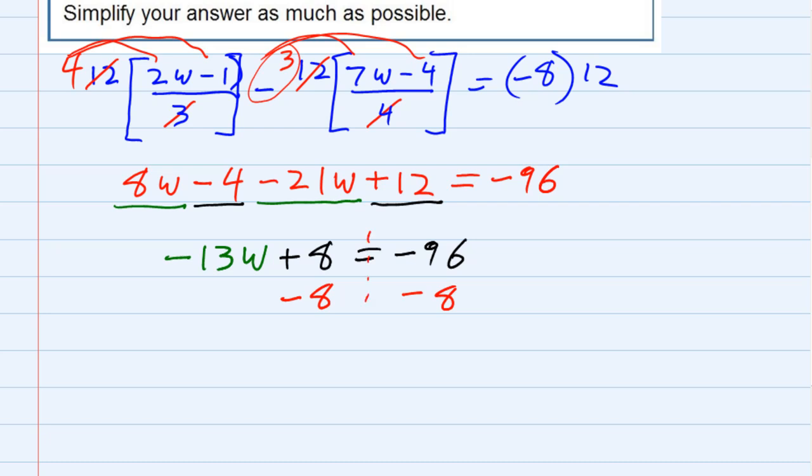Again, I've got to do it to the left and the right. That will cancel the 8's. Minus 13w is all that I have left on the left hand side and on the right hand side. The signs are the same, so I add and keep the sign. So that's negative 104.